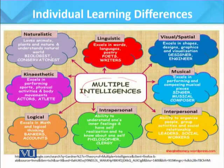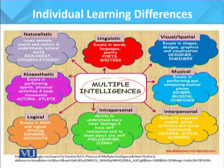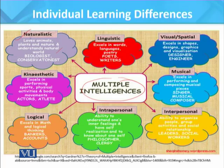Every individual develops specific intelligence based on their inclination and differences in learning. In naturalistic intelligence, the individual loves animals, plants, and nature and understands the natural world — like biologists or conservationists. Hunters, farmers, gardeners, artists, poets, and social scientists adept at pattern recognition would have a high level of naturalistic intelligence. Activities include birdwatching, studying the environment, reading nature magazines, or talking about favorite pets.